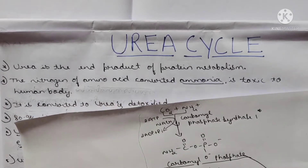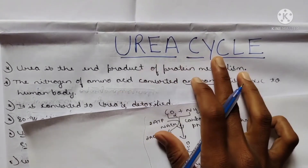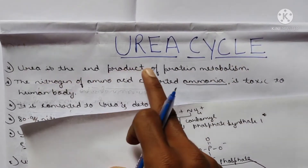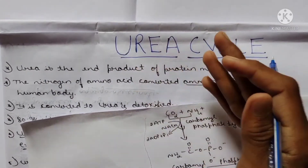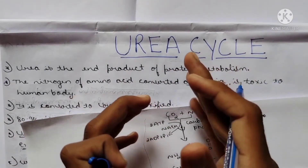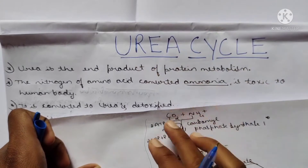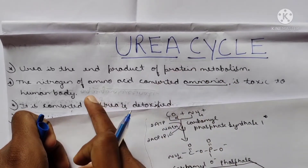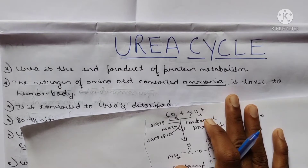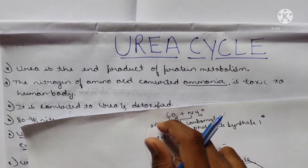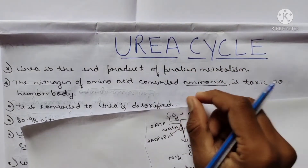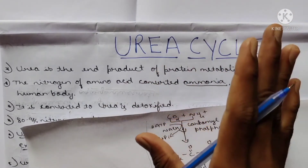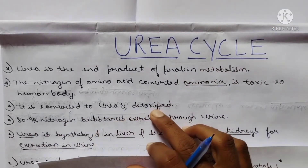Let's begin the concept. The urea cycle is an irreversible cycle. Urea is the end product of protein metabolism. Proteins are a group of amino acids combined together. The nitrogen of amino acids is converted to ammonia in the human body, and that ammonia is toxic to the human body, so it should be excreted via urine. It is converted to urea and detoxified.